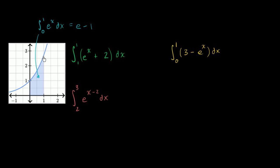Over here we have the graph of the function y is equal to e to the x. That right over there is y is equal to e to the x. This is our x-axis, and this is our y-axis.